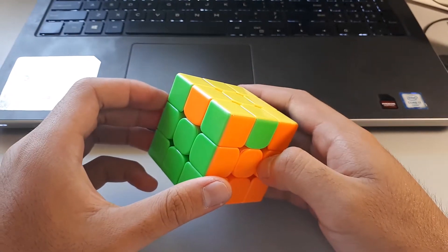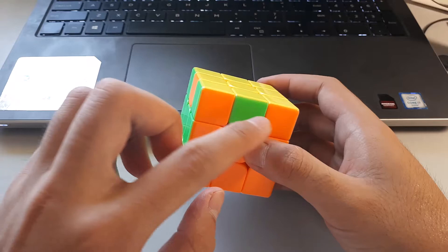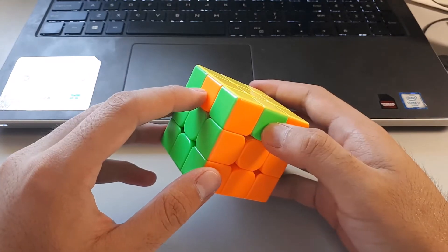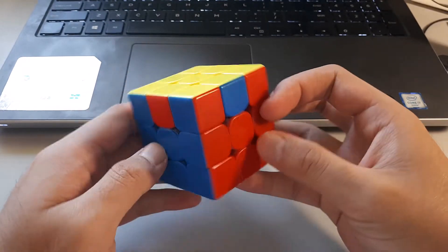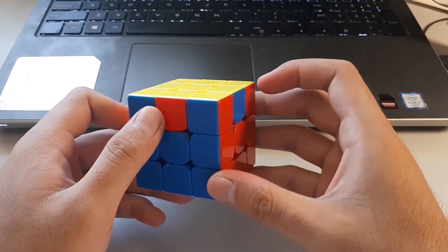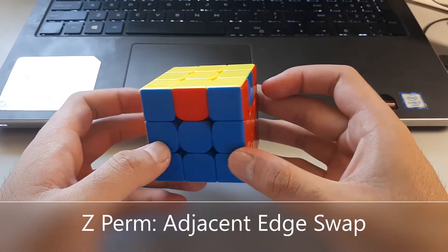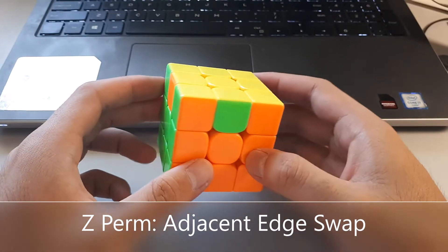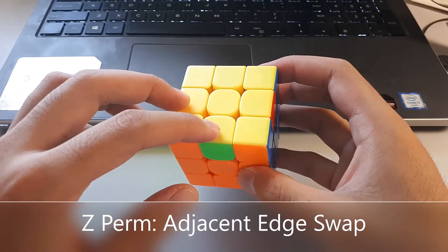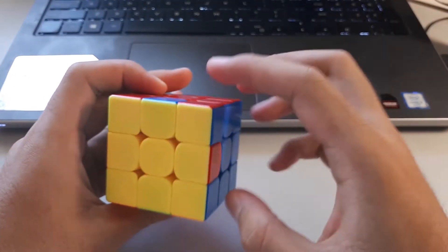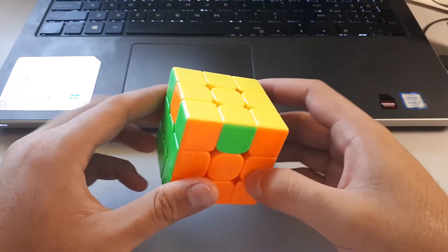The difference between this and the H perm is that these are adjacent colors. Orange and green are next to each other, and on the other side, red and blue are next to each other. This is the adjacent edge swap - these two next to each other are swapped, and these two on the other side have to be swapped.